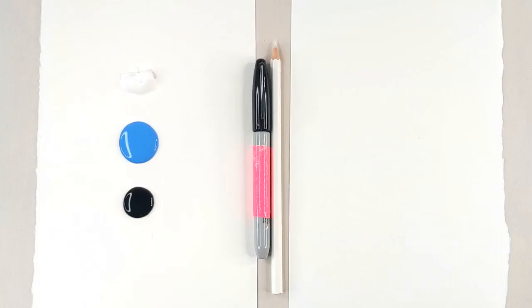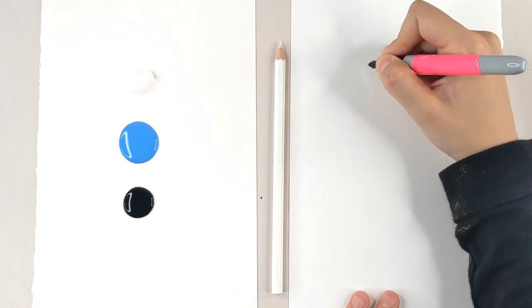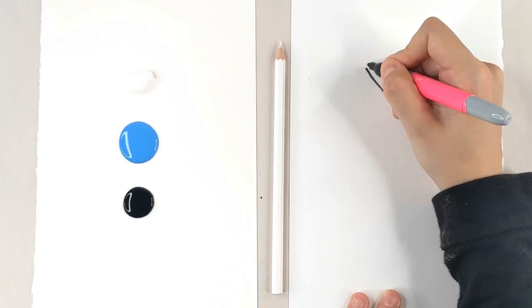Starting off we're going to use our black marker to create the antenna. We're going to make a big V and throw a little dot at the top because that is the butterfly's feelers.